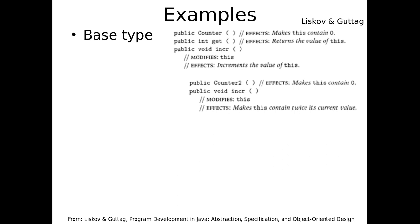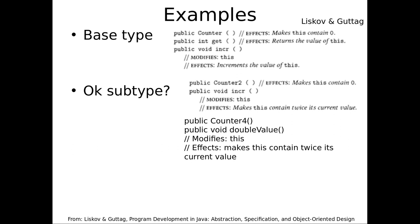How about Counter 4? Counter 4 purports to be a subtype of Counter and just provides an extra method called doubleValue beyond what Counter provides — it inherits get and increment. Is this a legitimate subtype? Yes. Does it break any preconditions or postconditions? No — in fact these methods aren't overridden at all. There's no property about Counter that you can't also satisfy with Counter 4.